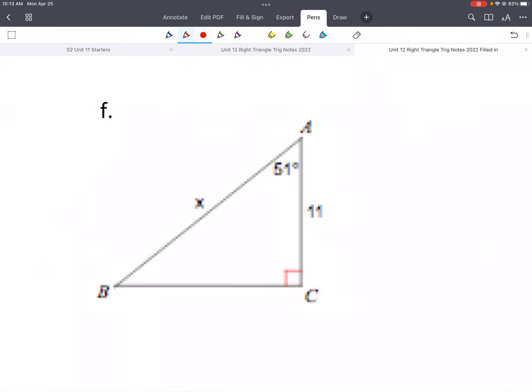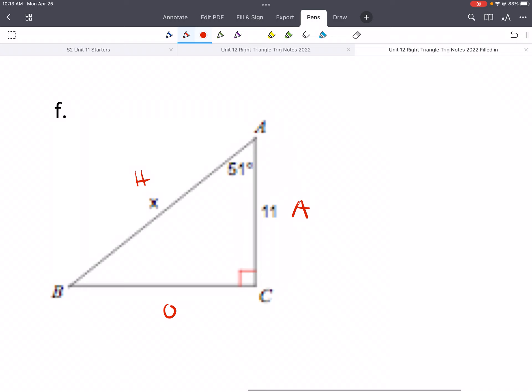So again, reference angles. We've got H, O, and A. So what uses A and H? Well, that's ca. Cosine is adjacent over hypotenuse. So cosine of 51 equals A over H. So we'd multiply both sides by X and then divide both sides by cosine of 51. So we'd get X equals 11 over cosine of 51. So 11 divided by cos, 51. Type that in your calculator. X equals 17.5.